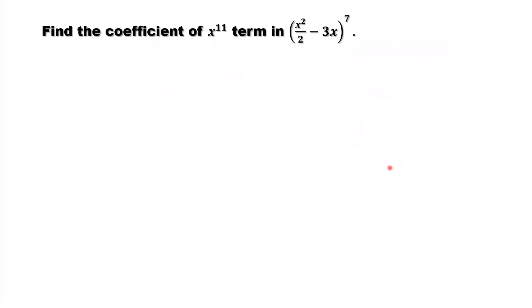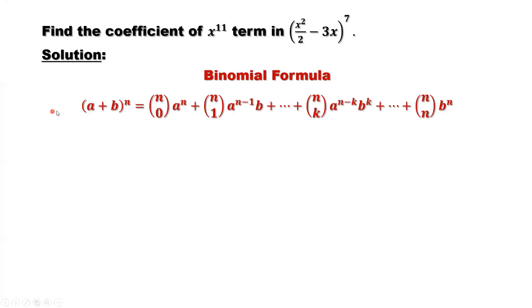How to solve this question? We are going to use an important formula, the binomial formula. (a+b)^n equals nC0 times a^n plus nC1 times a^(n-1) times b, plus the general term nCk times a^(n-k) times b^k, plus until nCn times b^n.